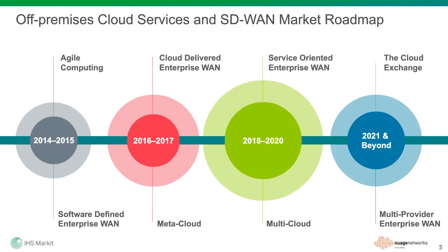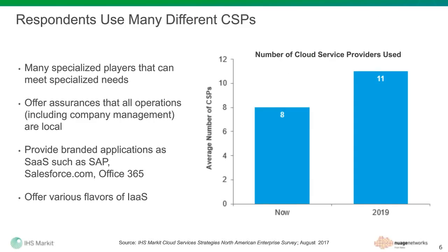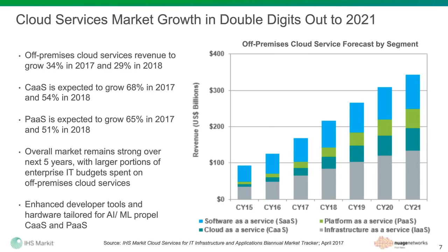We've been tracking the launch of the multi-cloud for a number of years in our surveys. We asked North American enterprises in our most recent survey in August how many different cloud service providers they're using. On average, already in North America, that was at eight and expected to grow to eleven. This is a mix of IaaS providers and SaaS providers, but nonetheless all very important from a management perspective. We've asked this question consistently over the last number of years, and we've seen consistent and growing results.